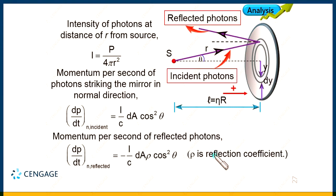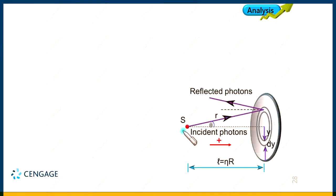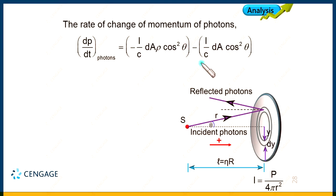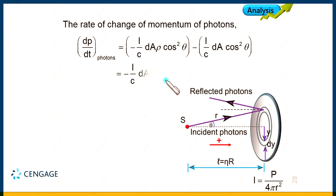The change in momentum per second equals final momentum minus initial momentum. Taking the common factor I/c · dA · cos²θ, the change in momentum per second is (I/c) · dA · cos²θ · (1 + ρ). The magnitude of this gives the force exerted by the radiation on this ring element dFn, directed in the rightward direction.